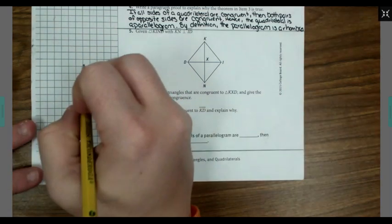Part A: list the three triangles that are congruent to triangle KXD and give the reasons for their congruency. Part B: list all segments congruent to KD and explain why. Part C: complete the theorem. If the diagonals of a parallelogram are blank, then the parallelogram is a blank.